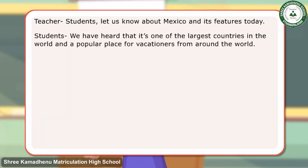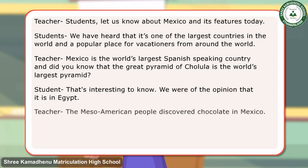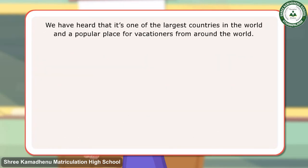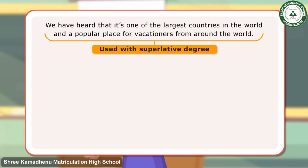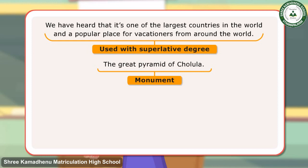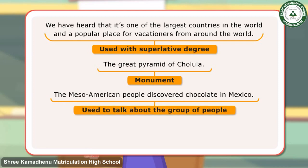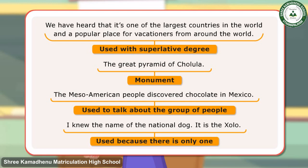In the dialogues, the teacher and the students have used the definite article. Here are some examples: We have heard that it's one of the largest countries in the world and a popular place for vacationers from around the world — used with superlative degree. The Pyramid of Cholula — a monument. The Mesoamerican people discovered chocolate in Mexico — used to talk about a group of people. I knew the name of the national dog — it is the Zolo — used because there is only one.